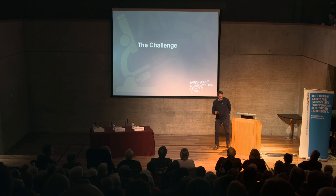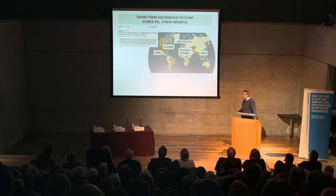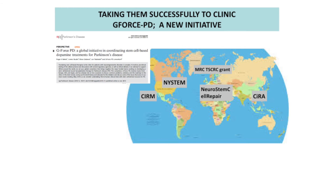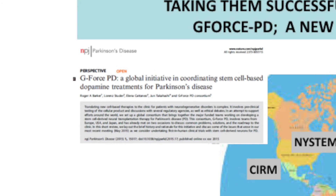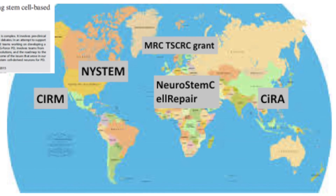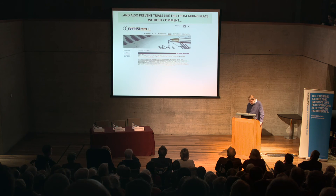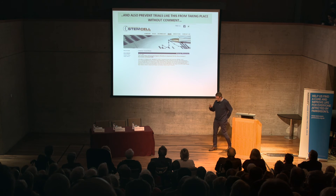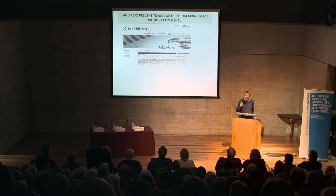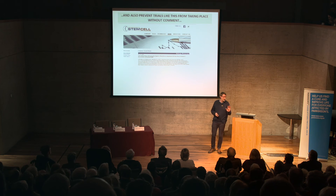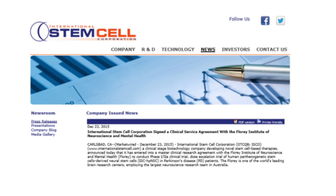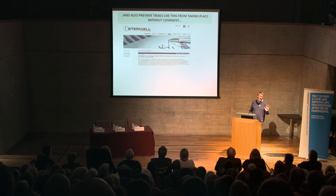The challenge is how we actually deliver this safely. We've tried to join up all the groups in the world working on this to make sure we do it properly and don't repeat past mistakes — bringing together Americans, Japanese, and Europeans. All these groups feel they will be filing for clinical trials in the next two to three years. I personally think we will be doing a first-in-human embryonic stem cell dopamine trial in Cambridge in 2018.